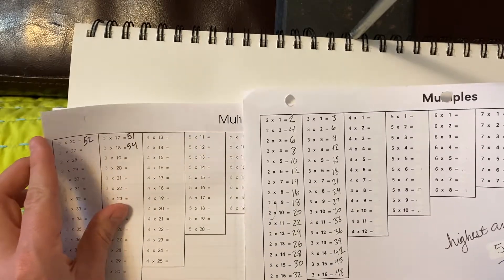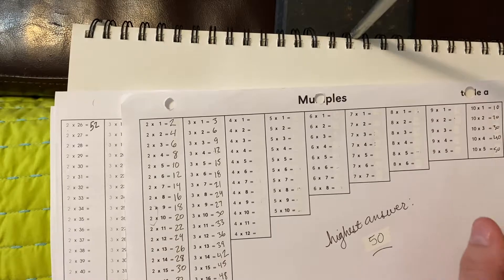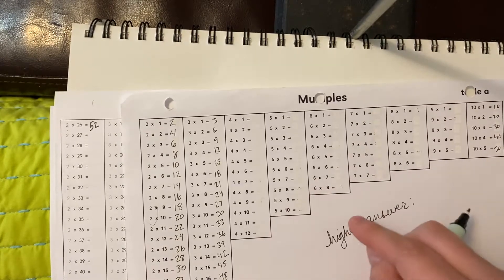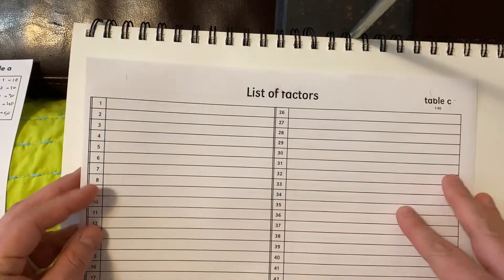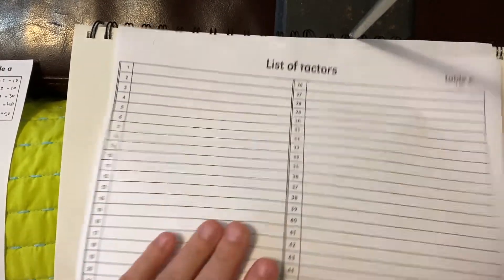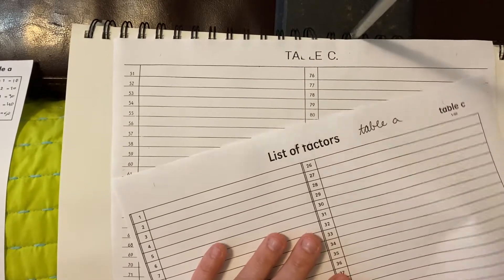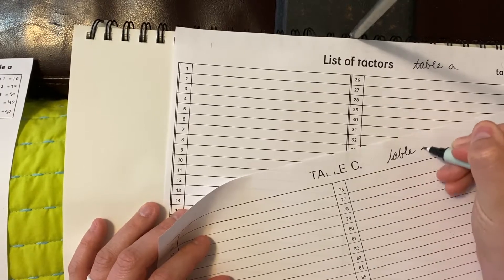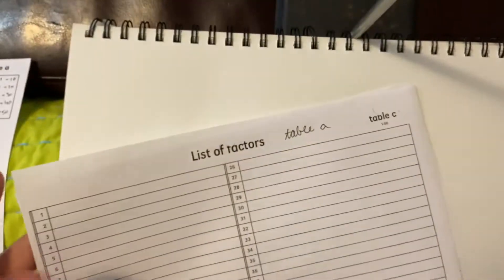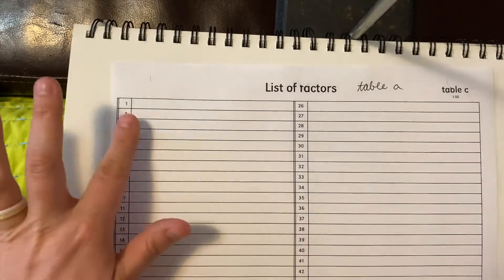Now let's take a look at table C. You can't start table C until you have a completed and correct table A and table B. Table C has two pages. The first page is 1 through 50, which uses table A. The second page is 51 through 100, which uses table B.